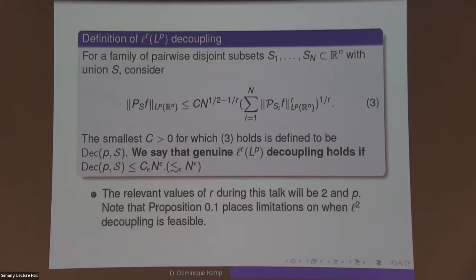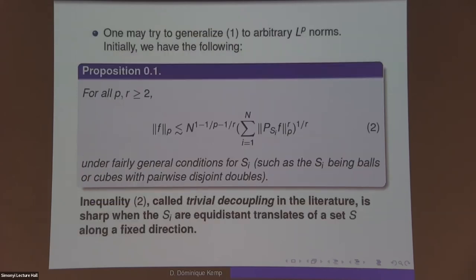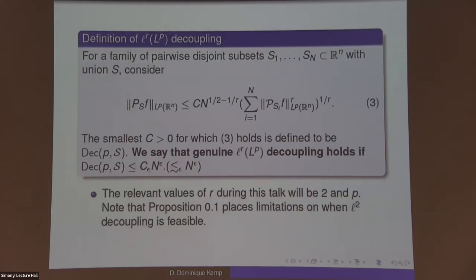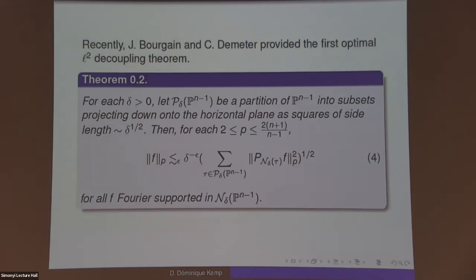More formally, here is the definition of LR LP decoupling. The key point is that instead of the previous factor N^(1-1/P-1/R), it's been reduced to 1/2-1/R, which is a strict loss in the exponent for R larger than 2. The relevant values of R will be either 2 or P.